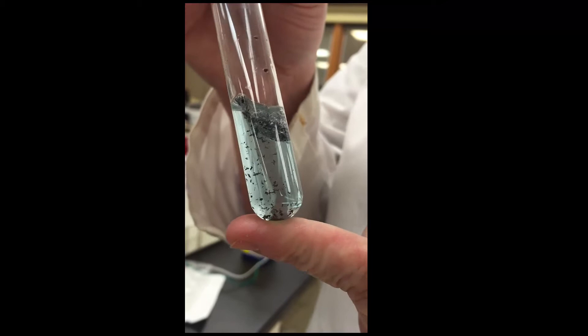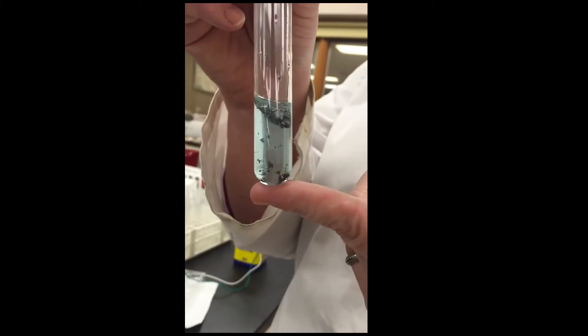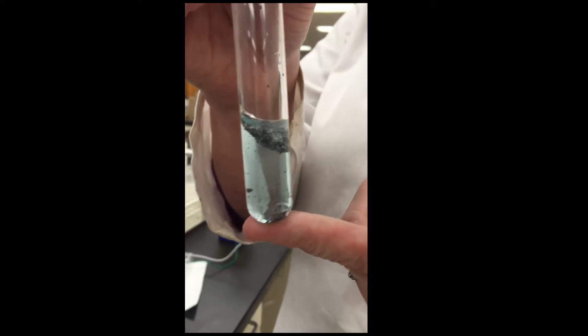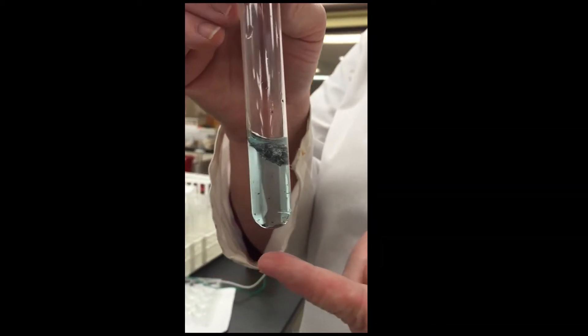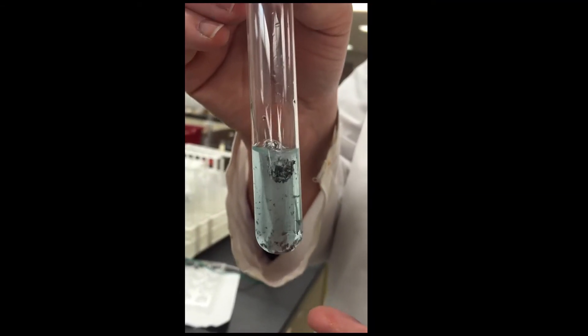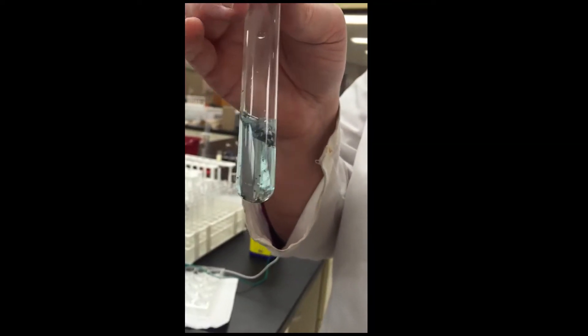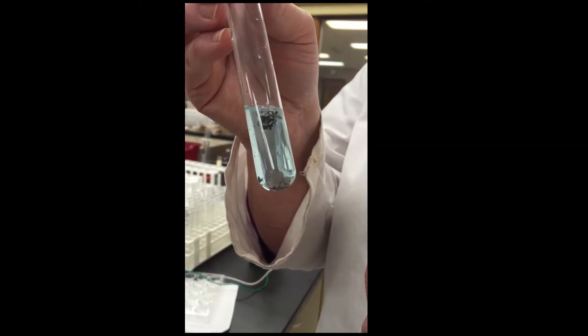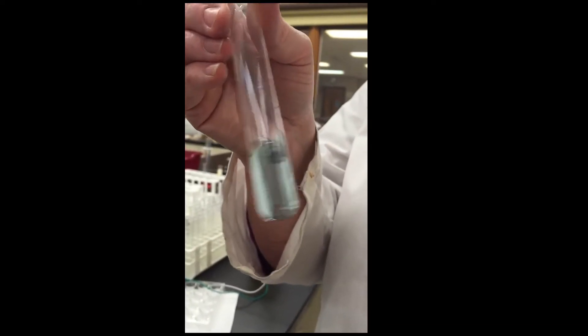As this reaction takes place, the blue color starts to fade because it is the copper ions that are making the solution blue. As those copper ions get their electrons back and become copper metal, they're no longer dissolved in the solution. They are becoming less concentrated, and it is getting less and less blue.